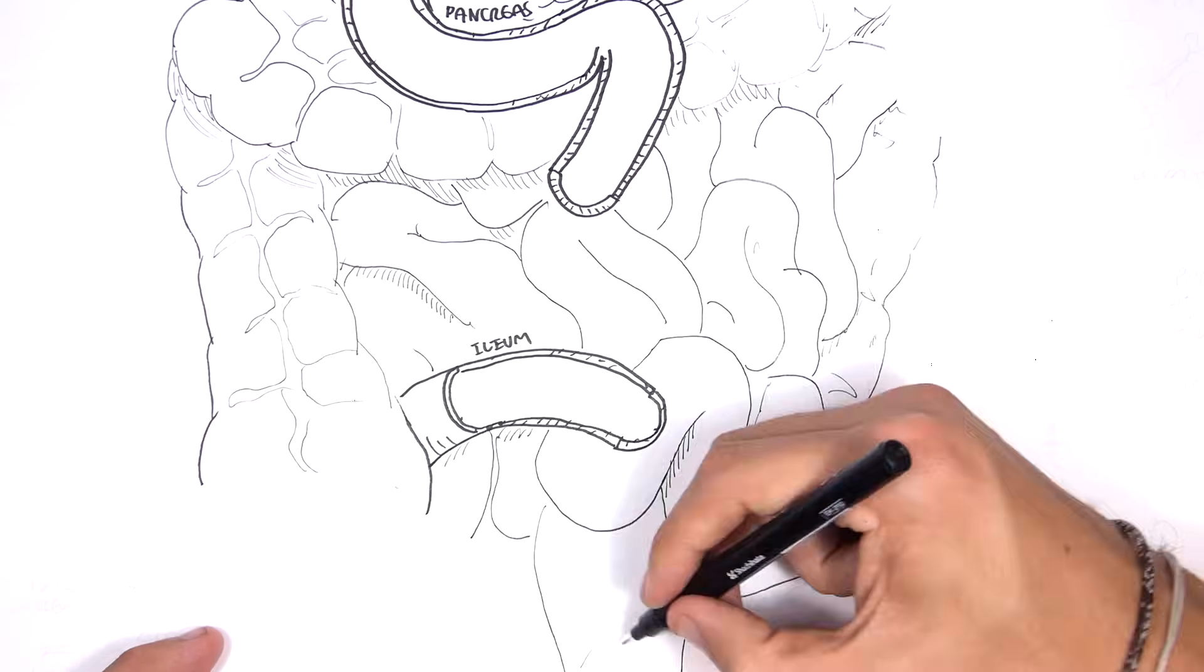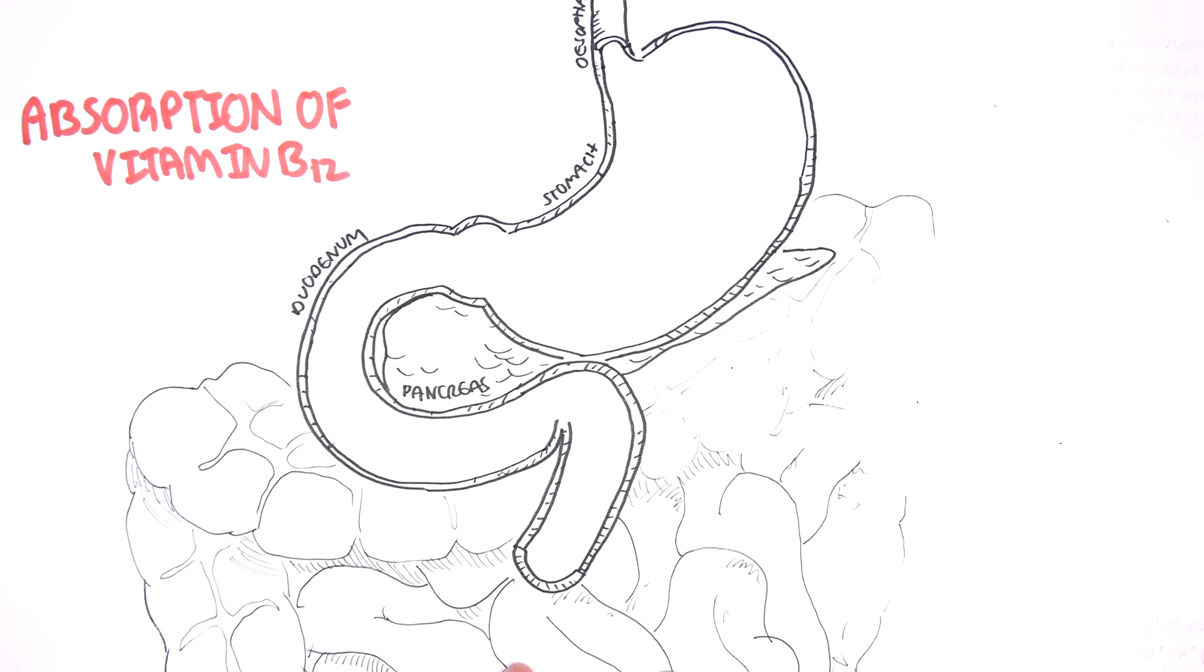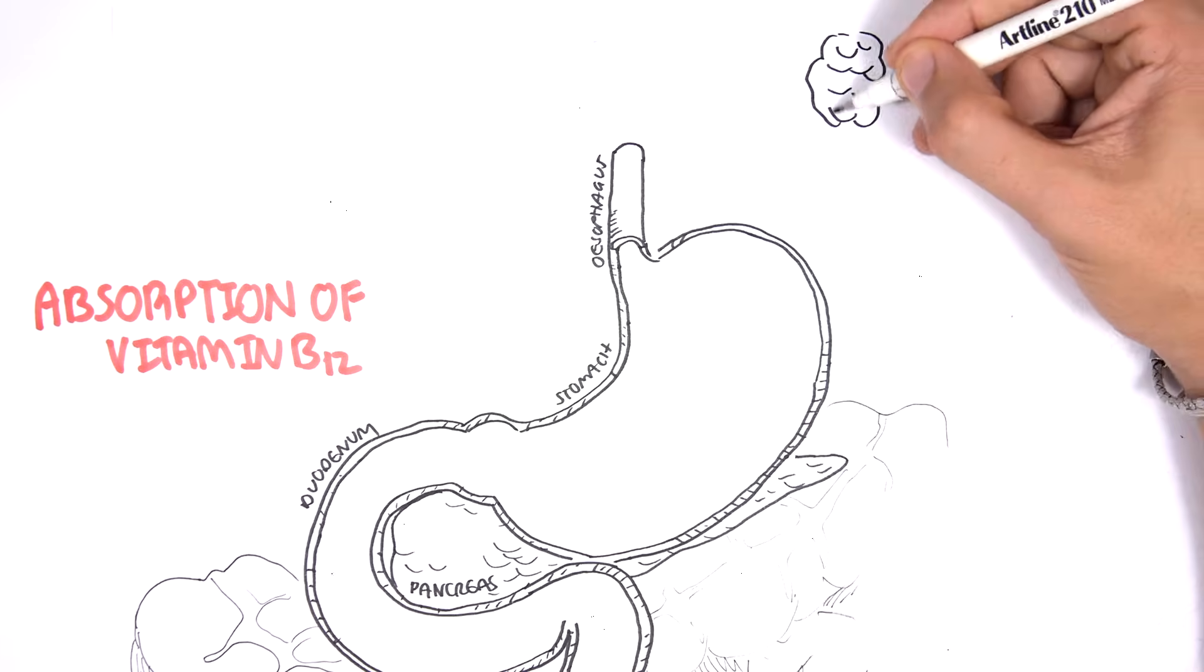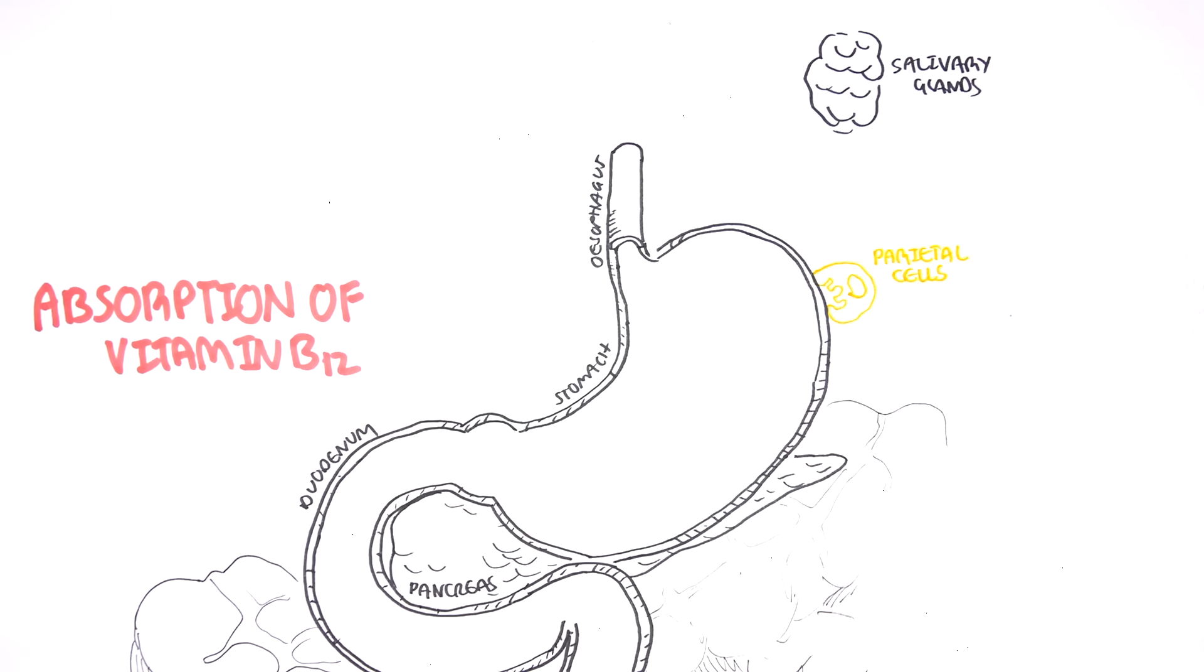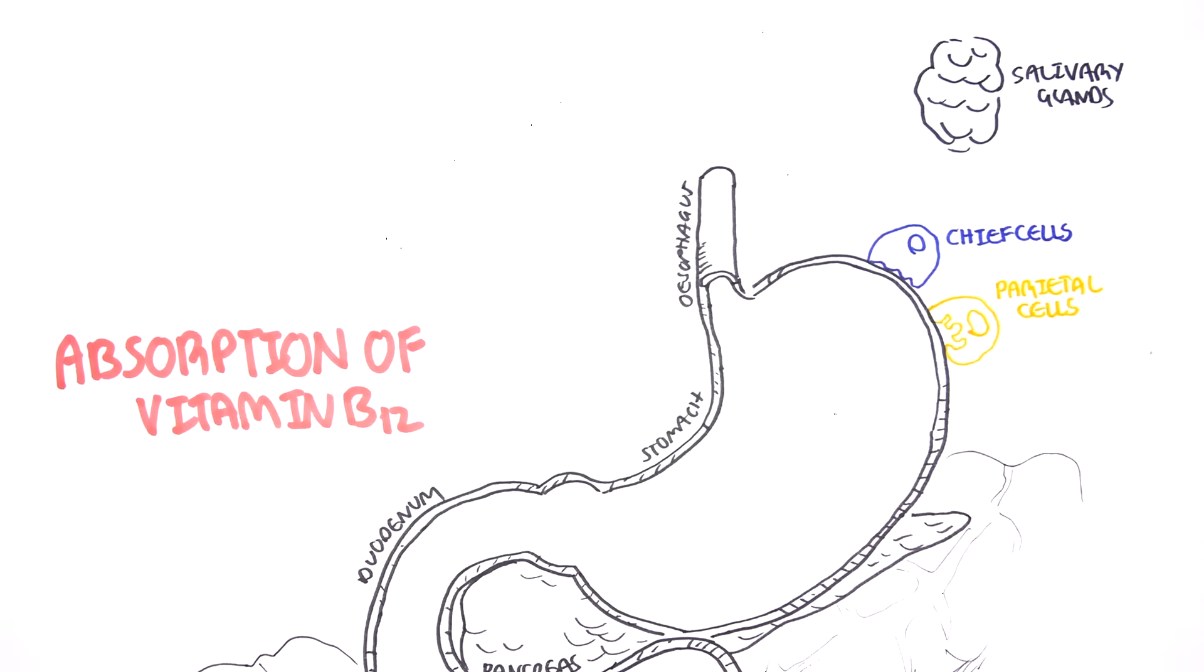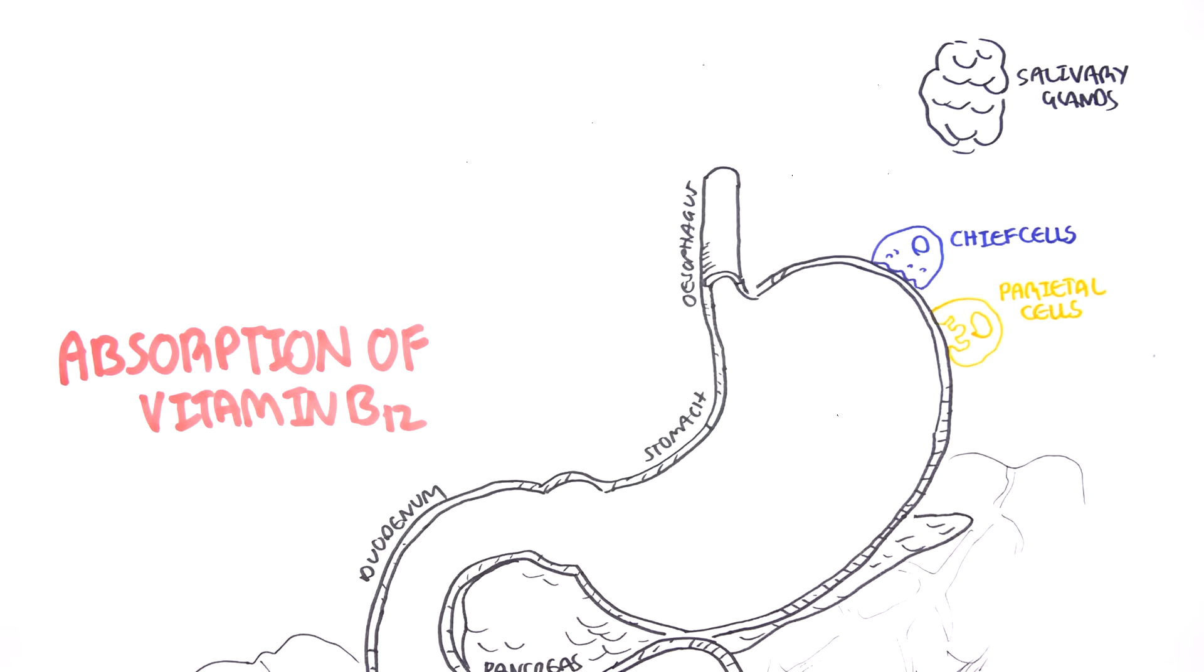Other important structures and cells are the salivary glands here, and within the stomach are two important types of cells that we must talk about. These are the chief cells, which produce your pepsinogen, and your parietal cells, which secrete hydrochloric acid.